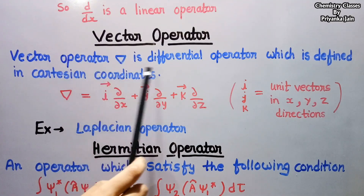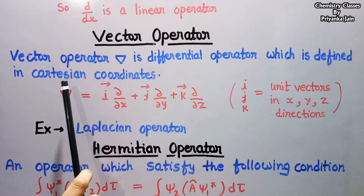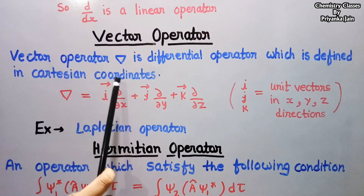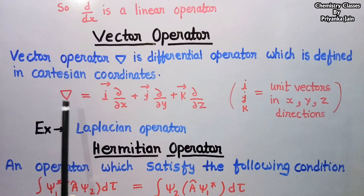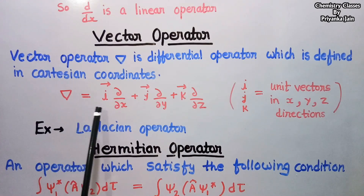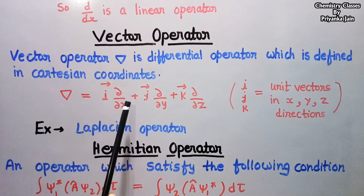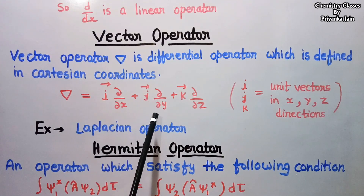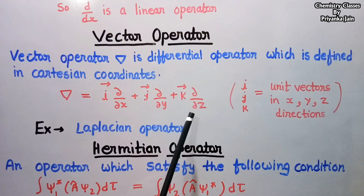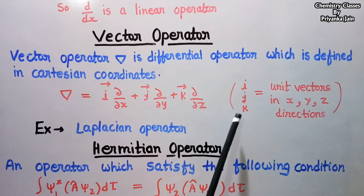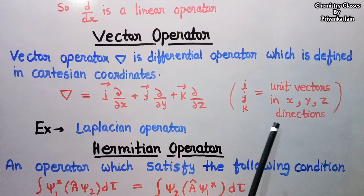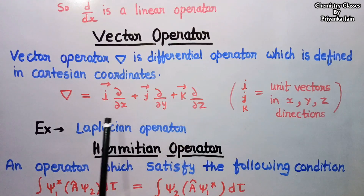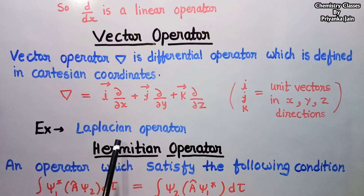The next type is the vector operator. The vector operator is a differential operator defined in Cartesian coordinates as a directional operator. It is denoted by the del symbol (∇) and equals i·∂/∂x + j·∂/∂y + k·∂/∂z, where i, j, and k are the unit vectors in the x, y, and z directions respectively. An example of the vector operator is the Laplacian operator used in the Schrödinger wave equation.